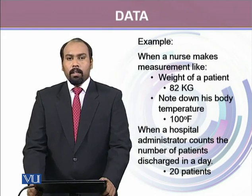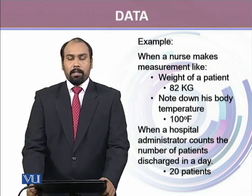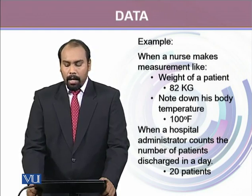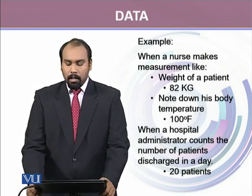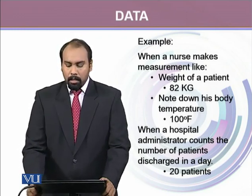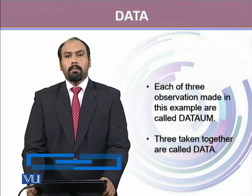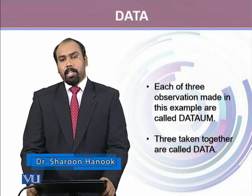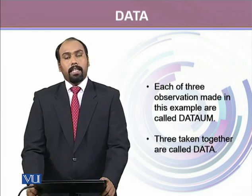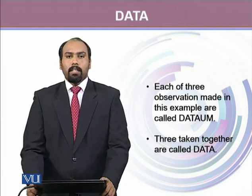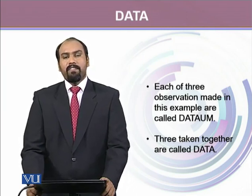Let's take a few examples. When in a hospital a nurse makes measurements like the weight of a patient — let's say it's 82 kilograms — and she also notes down the body temperature of a patient, which is 100 degrees Fahrenheit; or when a hospital administrator counts the number of patients discharged in a day, let's say 20 patients. In all these three pieces of information, each single individual observation is called a datum, whereas collectively all three are called data. Keep in mind: data is a plural term whereas datum is singular, so data is always a collection of facts and figures.